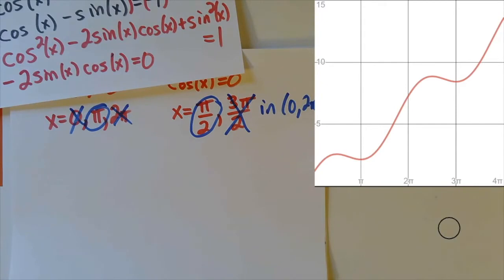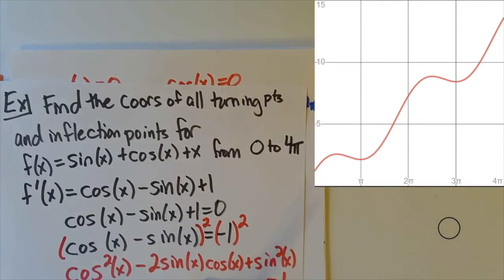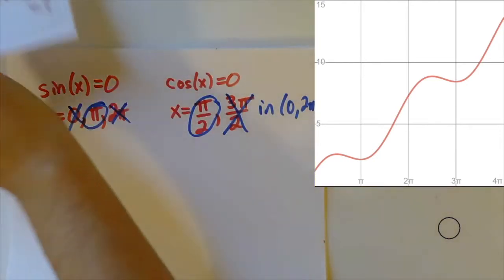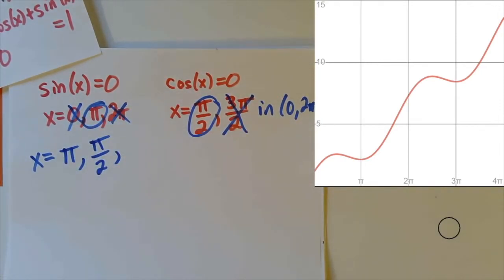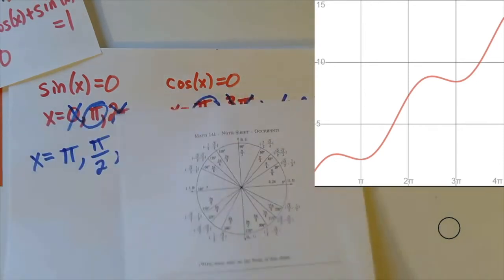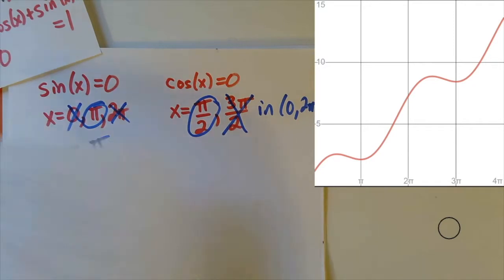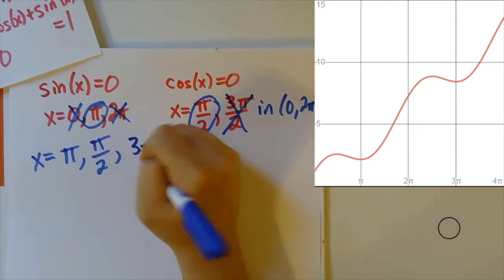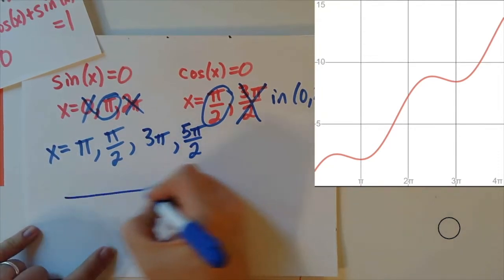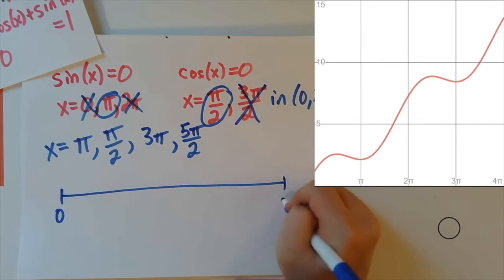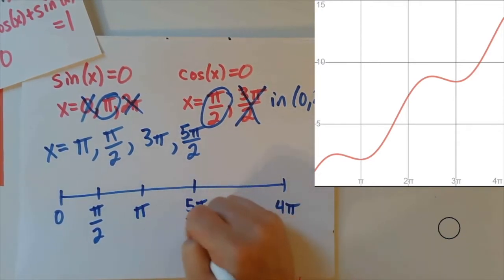Let's write down all our critical numbers, remembering we're looking between zero and four pi, not just zero to two pi. So the first two are pi over two and pi. But since we go around the unit circle twice to reach four pi, we add two pi to both of those, giving three pi and five pi over two. So writing down the number line from zero to four pi, we have pi over two, pi, five pi over two, three pi.